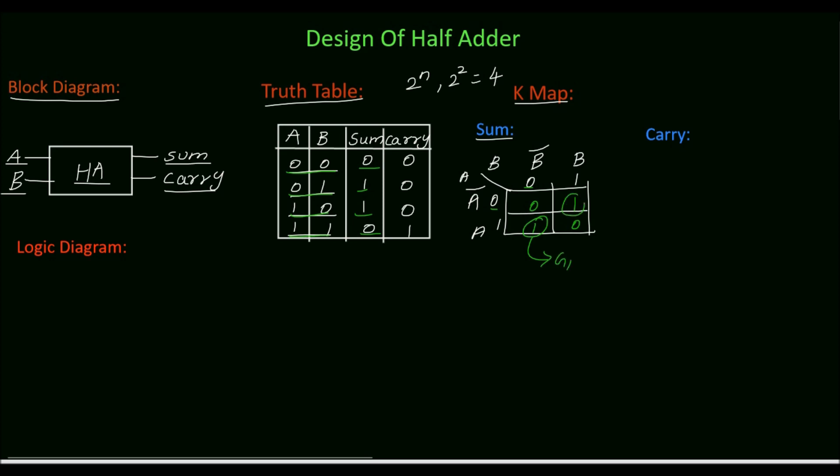Here also we have isolated 1 and we cannot make any pair with this 1. So mark this as group 2.